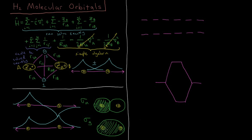So we've got these two molecular orbitals — the sigma-g and sigma-u — which are two spatial orbitals. That gives us four spin orbitals because we can put a spin-up and a spin-down electron in each of these molecular orbitals. For hydrogen, we have one electron from hydrogen-A and one electron from hydrogen-B when forming neutral H2.